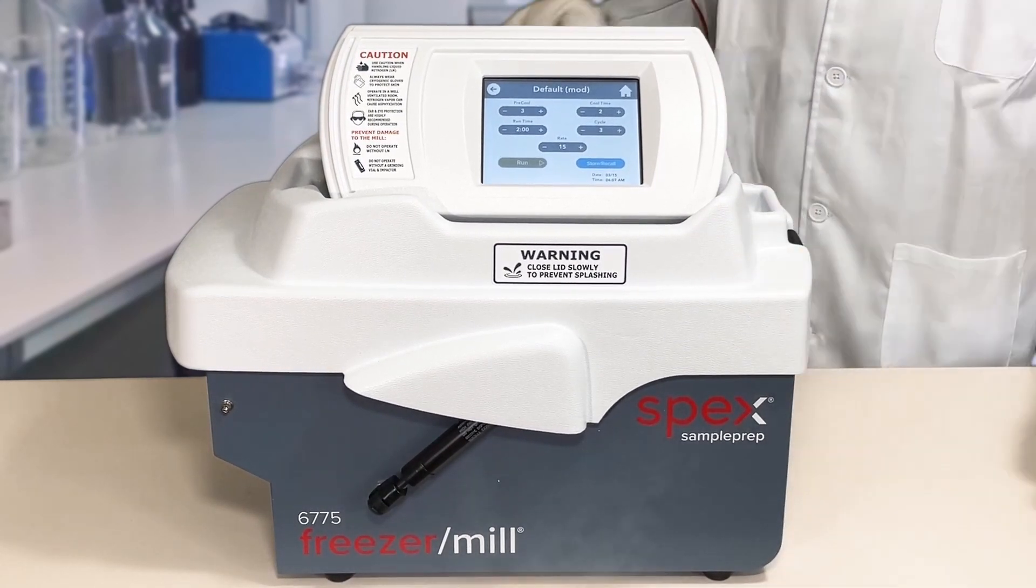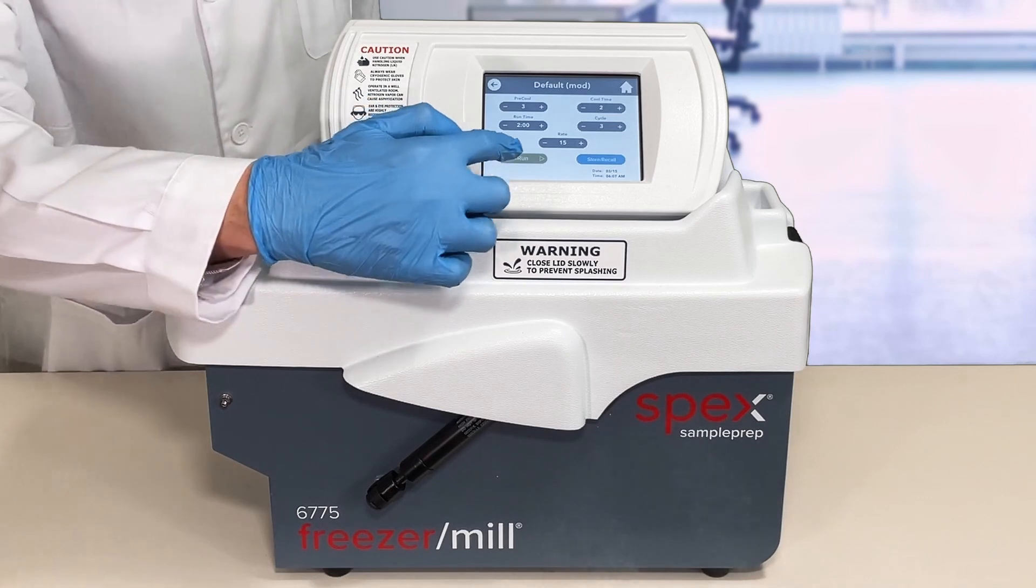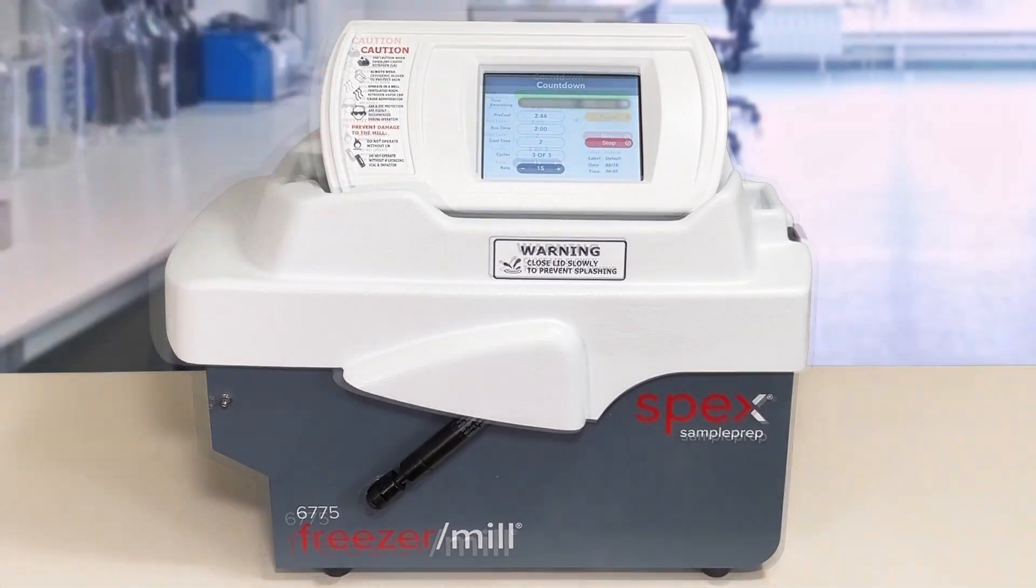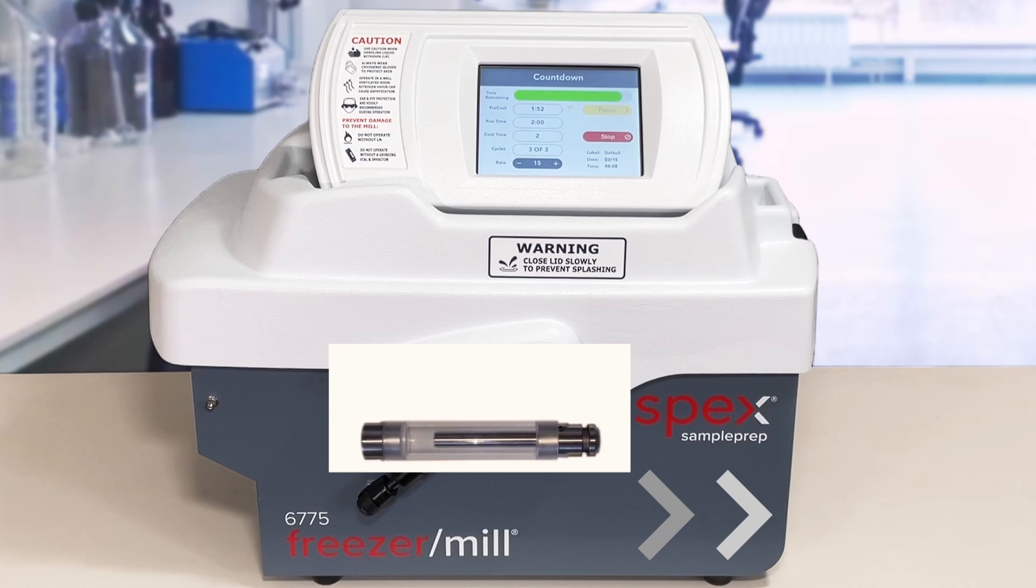You can then start your pre-defined program. The outside of the milling vial is stationary while an electromagnet hits the impactor back and forth.